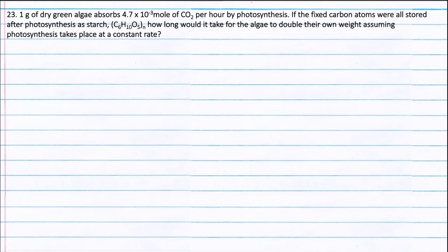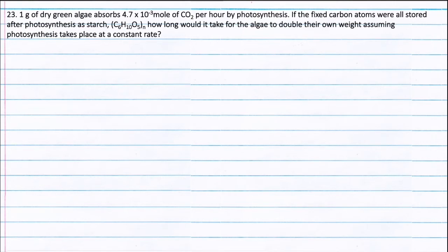Question 23. 1 gram of dry green algae absorbs 4.7 x 10 to the power minus 3 mol of carbon dioxide per hour by photosynthesis. If the fixed carbon atoms were all stored after photosynthesis as starch C6H10O5 whole N, how long would it take for the algae to double their own weight, assuming photosynthesis takes place at a constant rate?